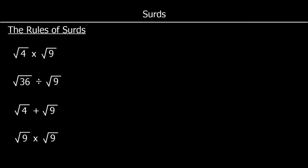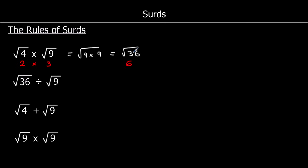So the first rule: root 4 times root 9. Root 4 times root 9 is the square root of 4 times 9. 4 times 9 is 36, so root 4 times root 9 is equal to root 36. I can show you that works — root 4 is 2, root 9 is 3, and root 36 is 6. So 2 times 3 equals 6. The rule is: root a times root b equals the square root of a times b.